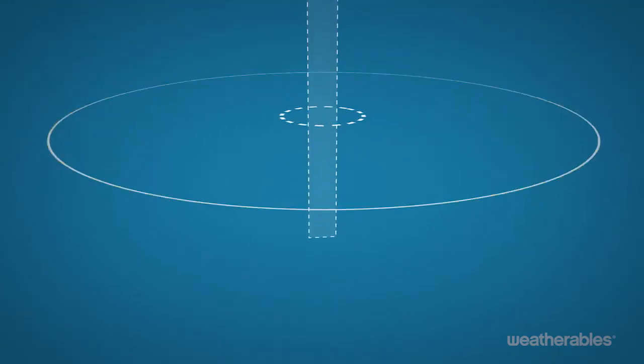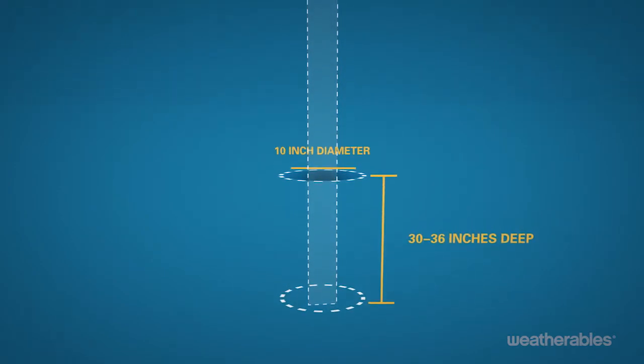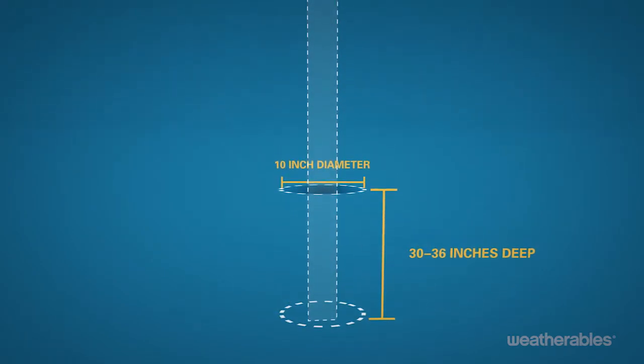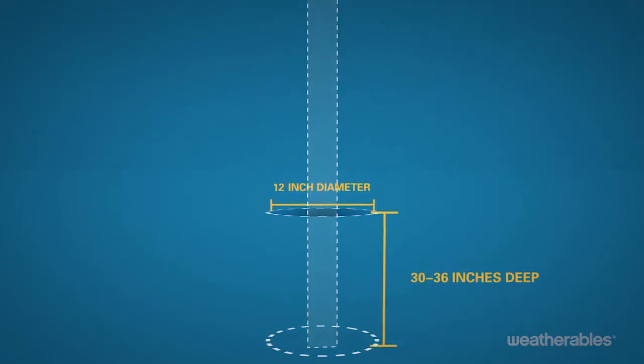After marking the locations of your fence posts, begin digging the post holes for the panels. The holes should be 30 to 36 inches deep and 10 inches in diameter for four by four inch posts and 12 inches in diameter for five by five inch posts.